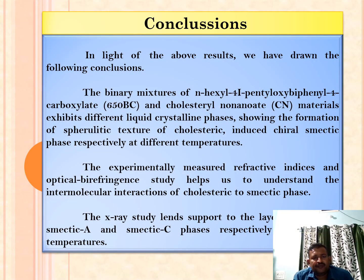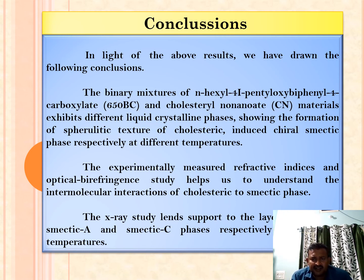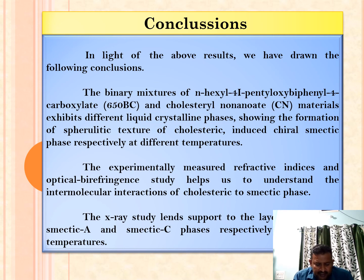In conclusion, the binary mixtures of 650BC and Cn materials exhibit different liquid crystalline phases showing the formation of spirolytic texture of cholesteric and chiral-induced smectic phases respectively at different temperatures. The experimentally measured refractive indices and optical birefringence study help us to understand the molecular interactions of cholesteric to smectic phase. The X-ray study lends support to the layer spacings of smectic A and smectic C phases respectively at different temperatures.